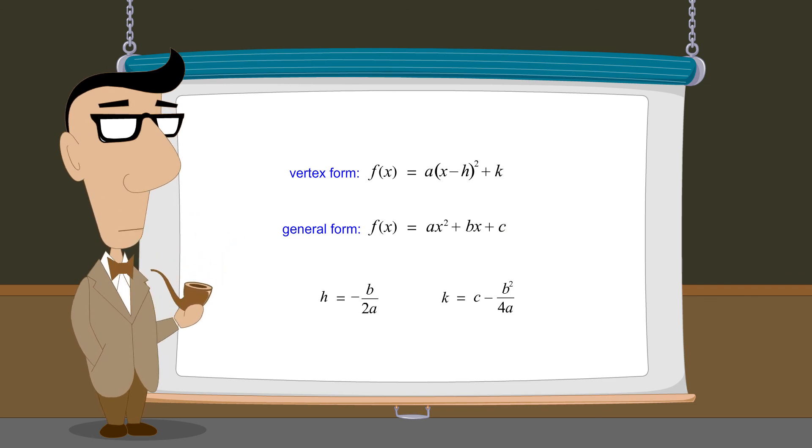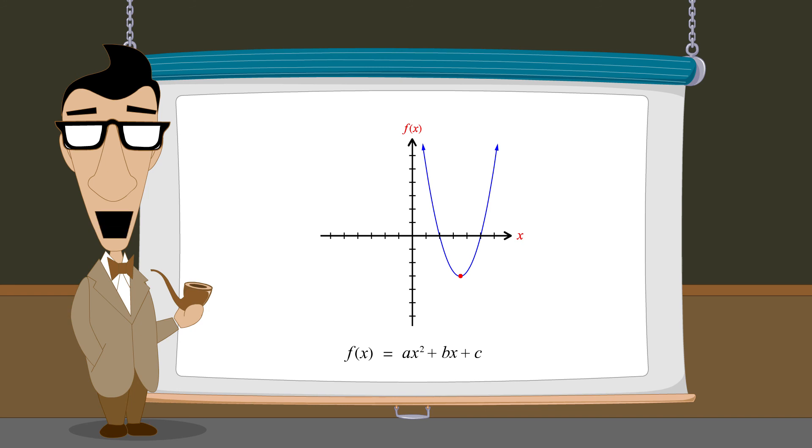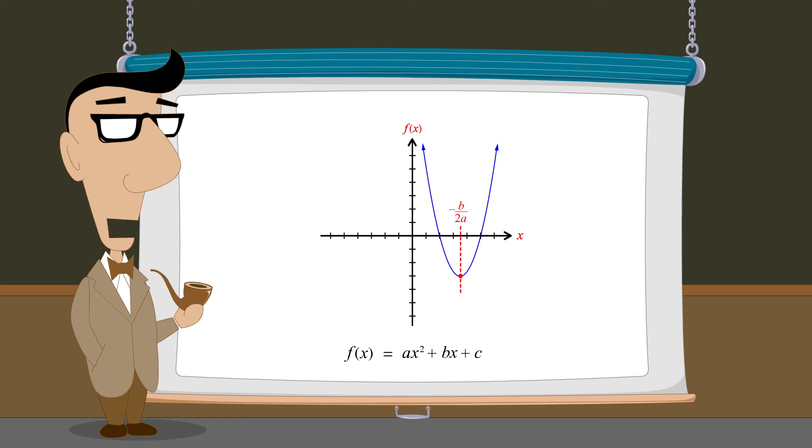You might recognize the formula we just derived for the vertex's horizontal position, negative b over 2a, from the previous lecture deriving the vertex form of a quadratic function. In that lecture, we saw that the vertex's x-coordinate is negative b over 2a, and by plugging that value for x back into the quadratic function, we can also calculate the vertex's vertical position.